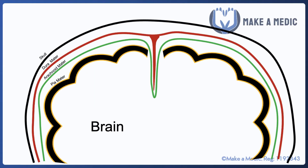To begin with, let's have a recap of the anatomy of the meninges. Here we have the brain in the middle, the skull on the outside, and three layers in between, which are the dura, the arachnoid, and the pia. The dura is essentially stuck onto the inside surface of the skull, the pia is stuck onto the surface of the brain, and the arachnoid is found in between.